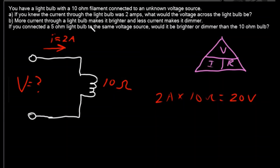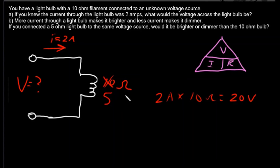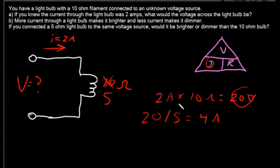Part B: the more current through a light bulb, the brighter it gets; the less current, the dimmer it gets. If you change this bulb from a 10-ohm bulb to a 5-ohm bulb, would it get brighter or dimmer? Using I equals V over R: 20 volts divided by 5 ohms equals 4 amps. Originally we had 2 amps, now we have 4 amps — since we have more current, the 5-ohm bulb is going to be brighter.